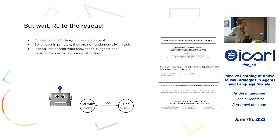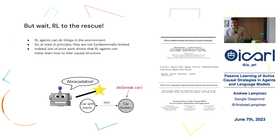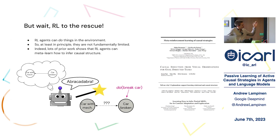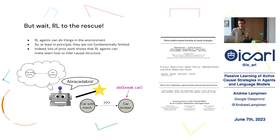Indeed, there's been a lot of prior work in machine learning showing that reinforcement learning agents can learn how to infer causal structure, or can meta-learn how to do that. The basic approach is to give an RL agent the ability to do interventions on the world, put it in a situation each episode with some new causal structure, have the agent do interventions, see how the world evolves, figure out the causal structure, and reward it for having correctly figured that out.